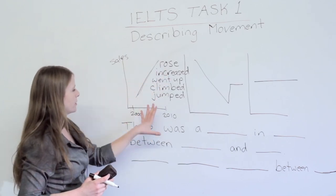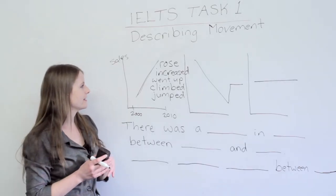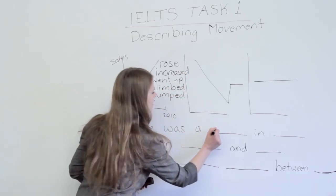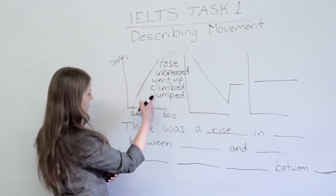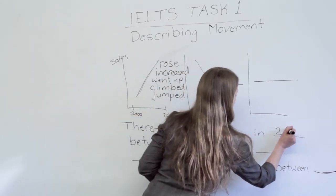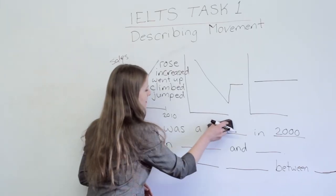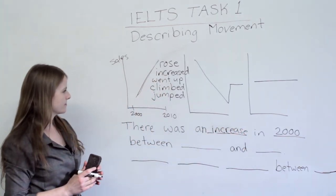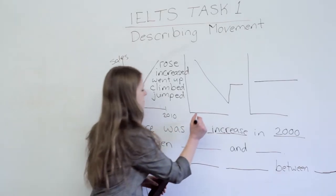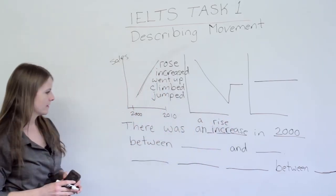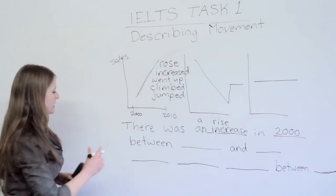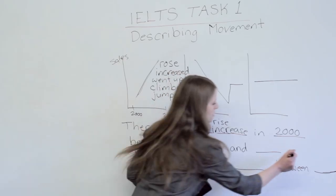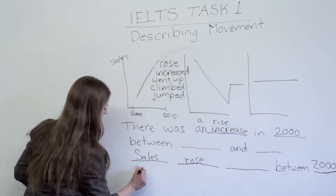We can also turn these upward-trend words into nouns. The noun form of 'rose' is 'rise.' So you could say: 'There was a rise in sales in 2000.' Or 'There was an increase.' So if we use the noun form: 'There was an increase in sales.' If we use the verb form: 'Sales rose between 2000 and 2010.'